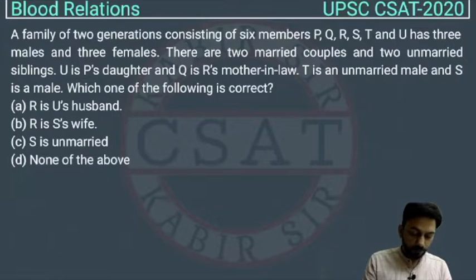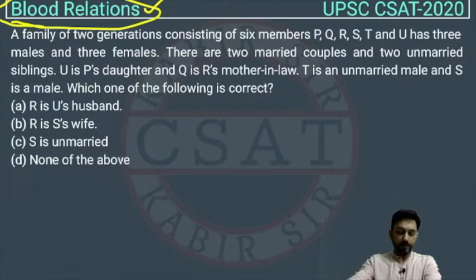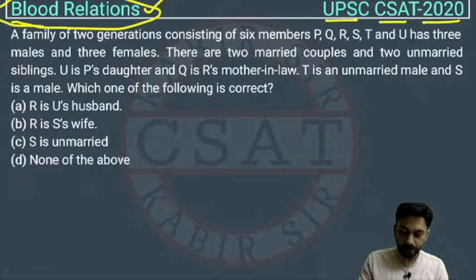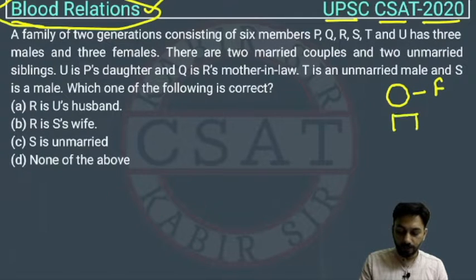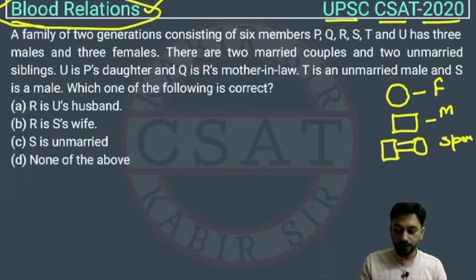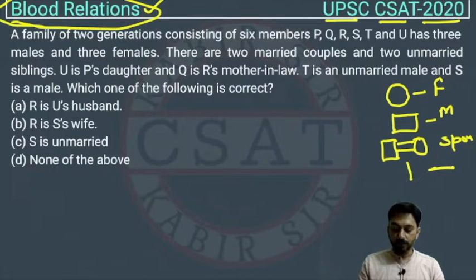This is a question from the chapter on blood relations, from the reasoning part. It was asked by UPSC in the CZ paper of 2020. In blood relation problems, we represent female by a circle, rectangle represents male, an equal sign between male and female represents a spouse relation, a vertical line represents generation, and a horizontal line denotes siblings.